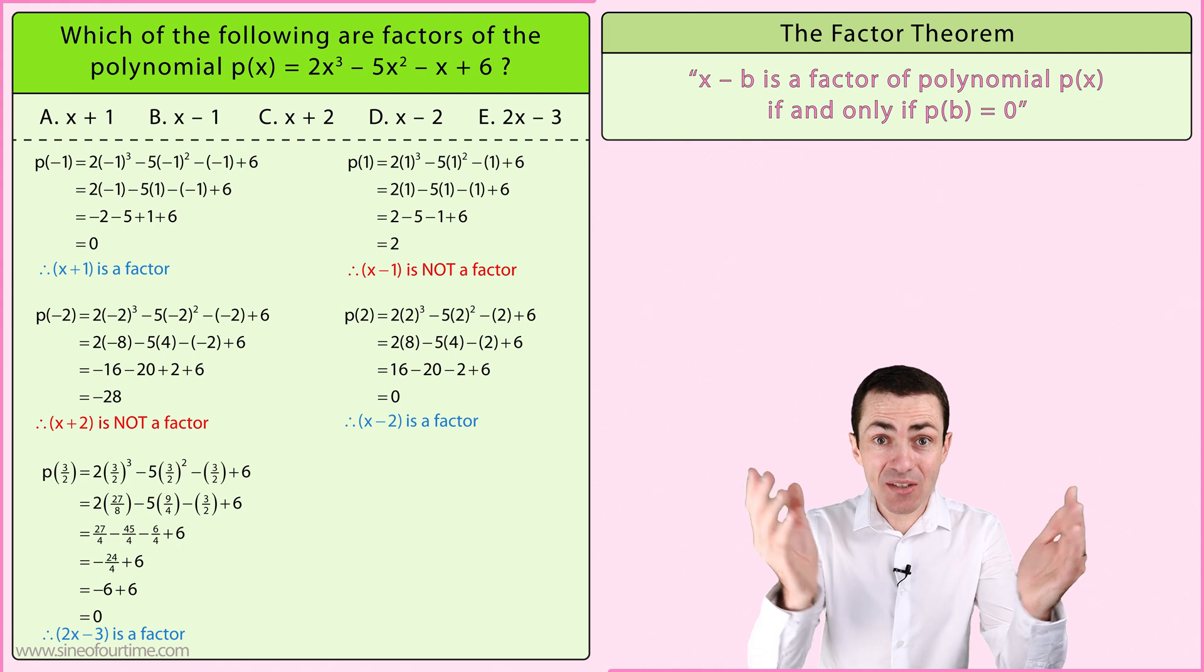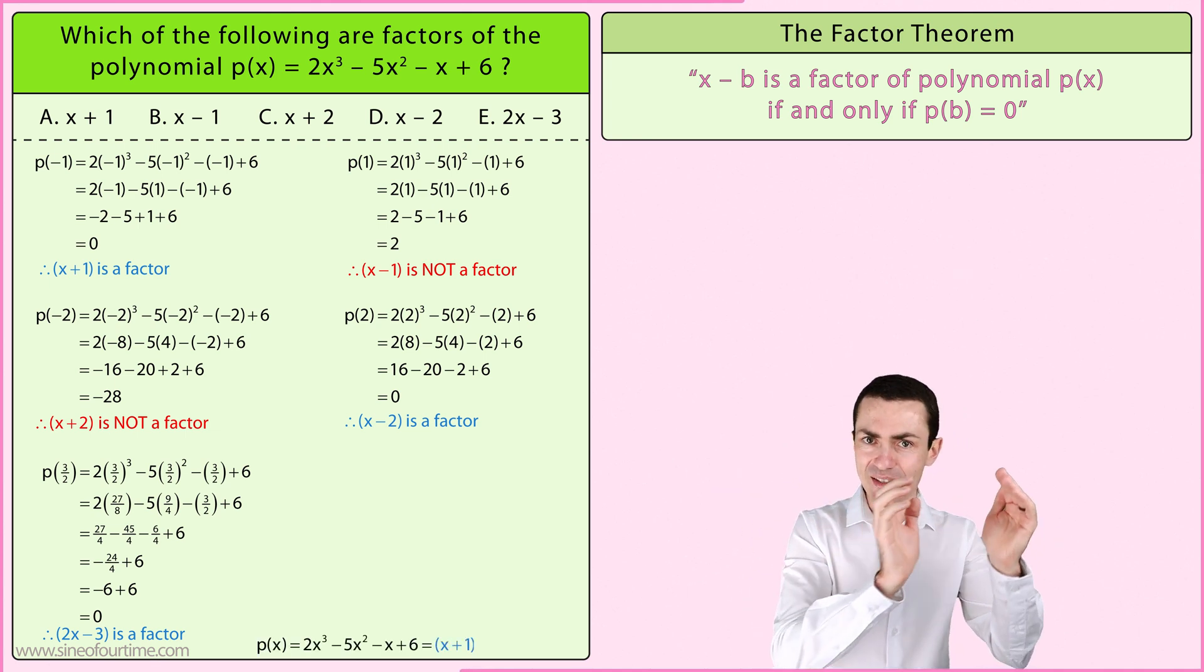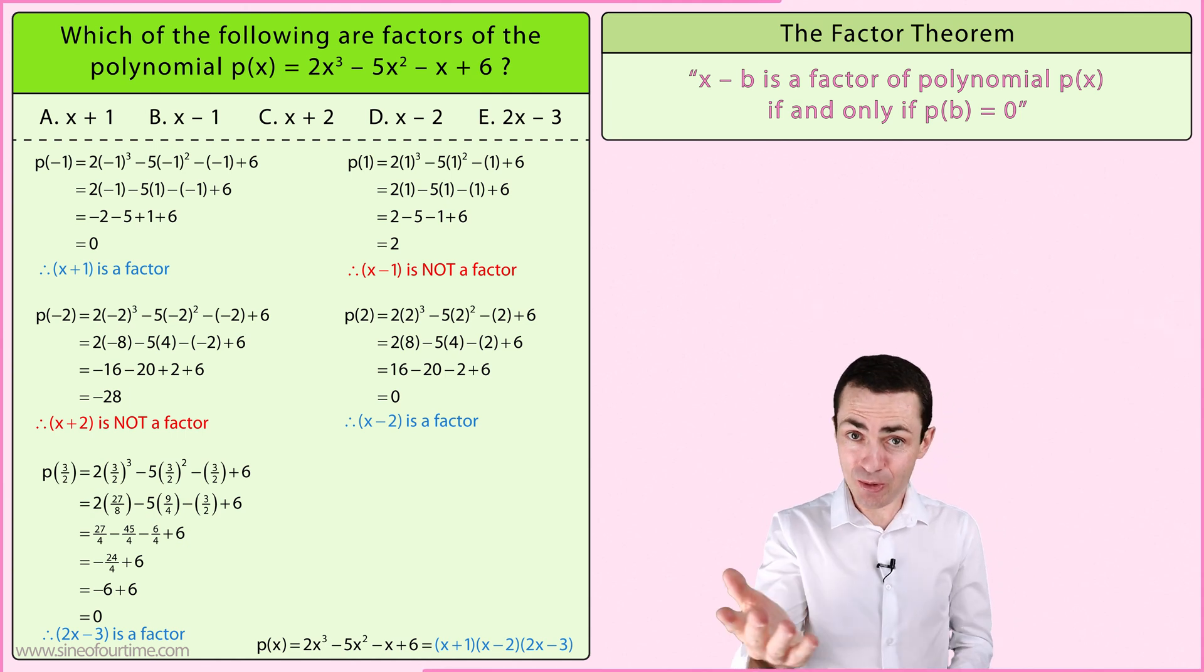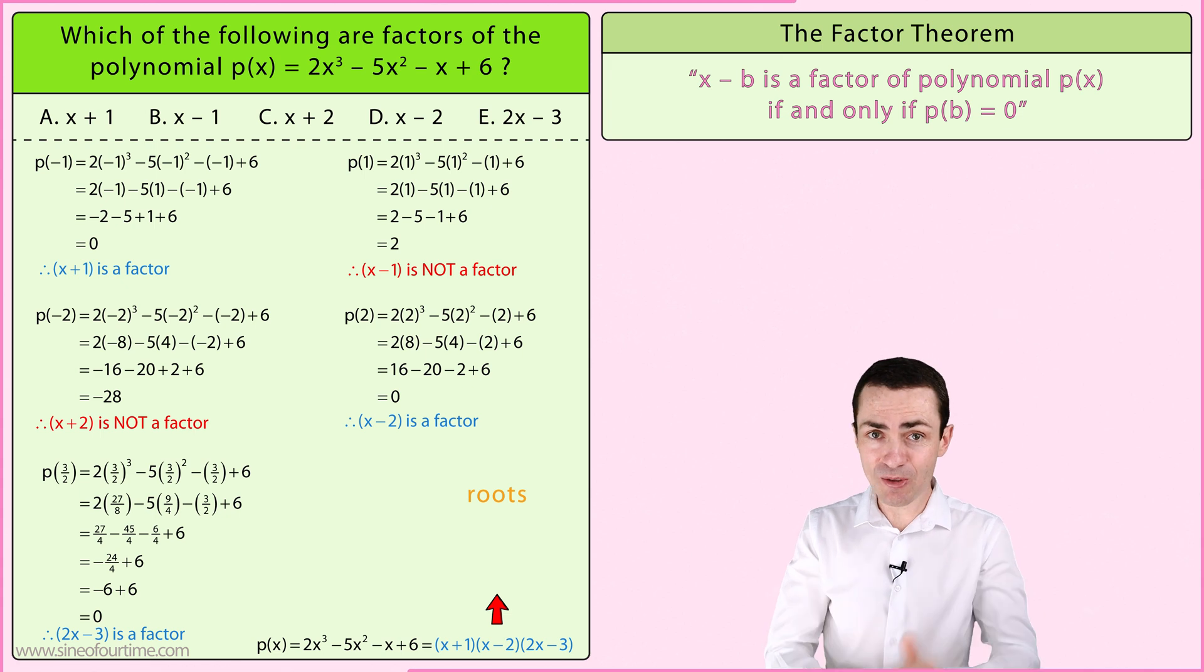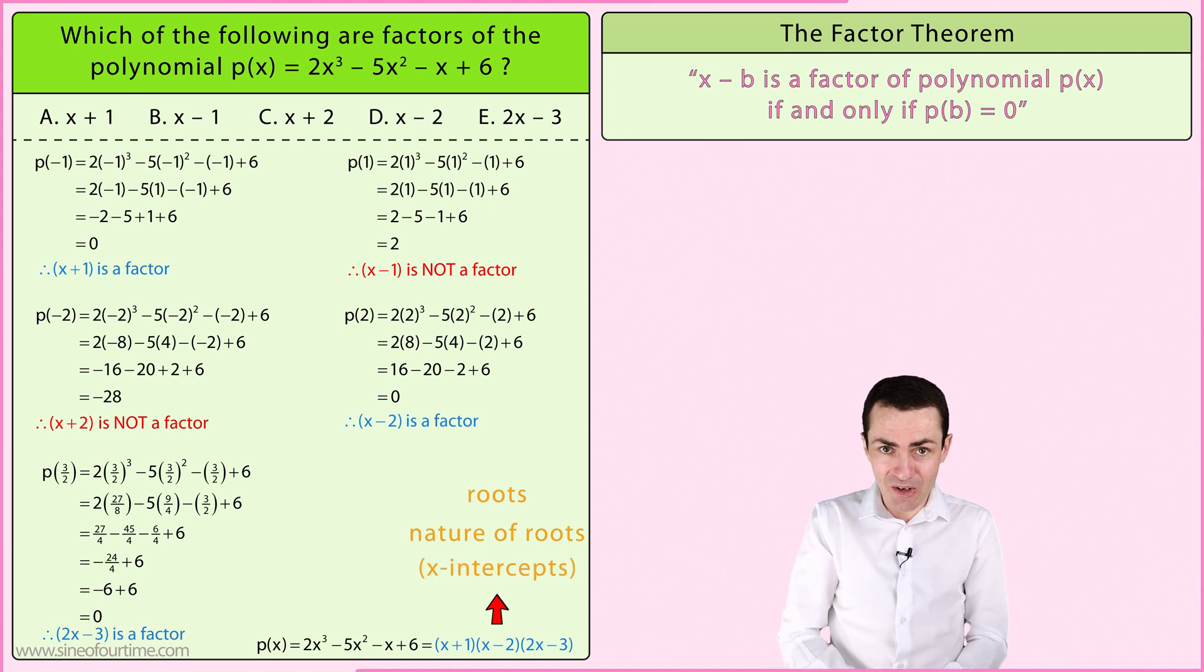In actual fact, we have identified all of the factors of this polynomial. We know this since the degree of the polynomial is 3, and we have identified three different factors, each with a degree of 1, which adds up to 3. In other words, we can rewrite this polynomial in its fully factored form. This is useful because the factored form tells us about the roots as well as the nature of the roots of this polynomial function. In simple English, it tells us about the x-intercepts of this polynomial function.